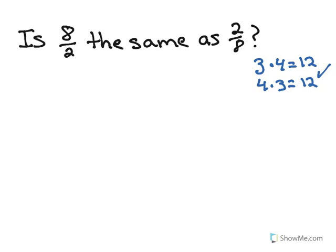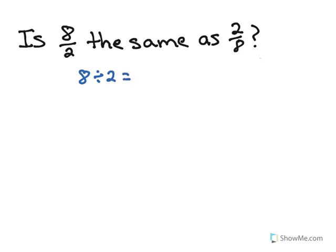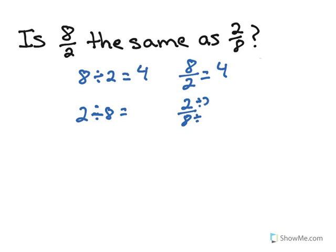The question is, does it work for division? Is 8 divided by 2 the same as 2 divided by 8? We can see 8 divided by 2 equals 4 in fraction form. Now 2 divided by 8 does not equal 4. Looking at it in fraction form and dividing top and bottom by 2, we get 1 fourth. So 2 divided by 8 is 1 fourth — that is definitely not the same. The commutative property does not work for division.